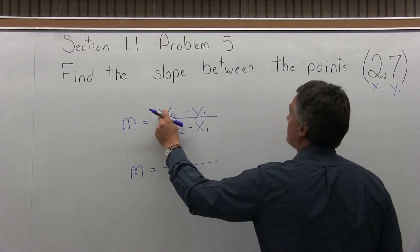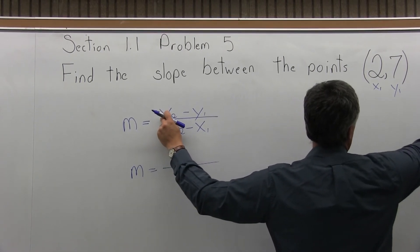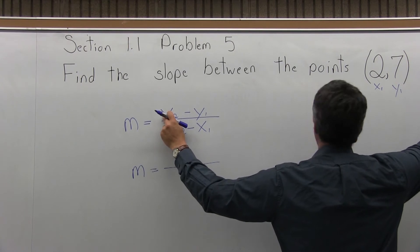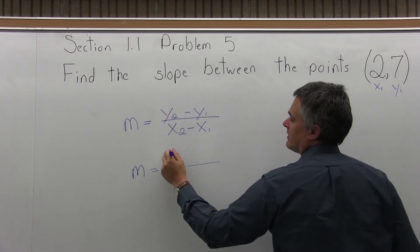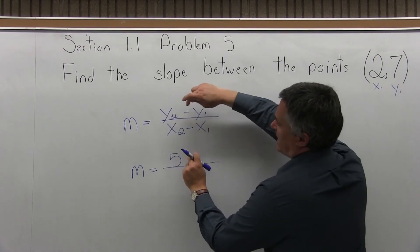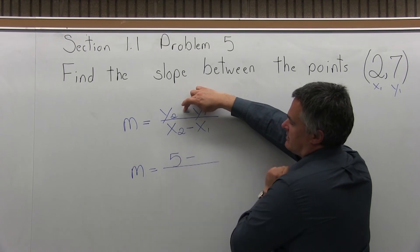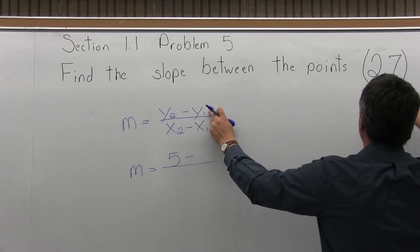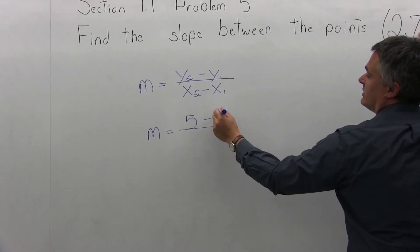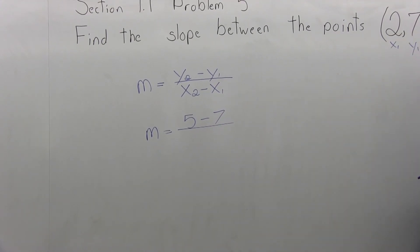y2 is what I fill in first. As I look at my labeling, y2 is 5. Then I have a minus, so that goes in. Then y1 is 7 because of how it's labeled, so it takes care of the numerator.